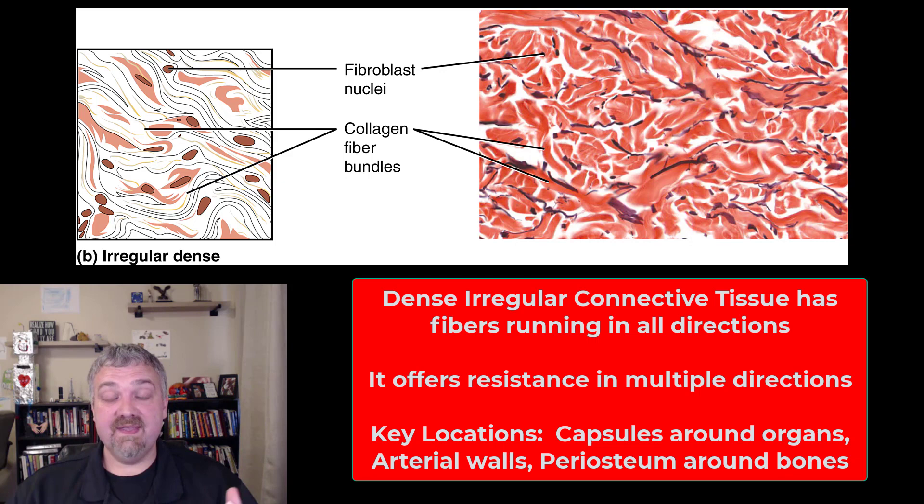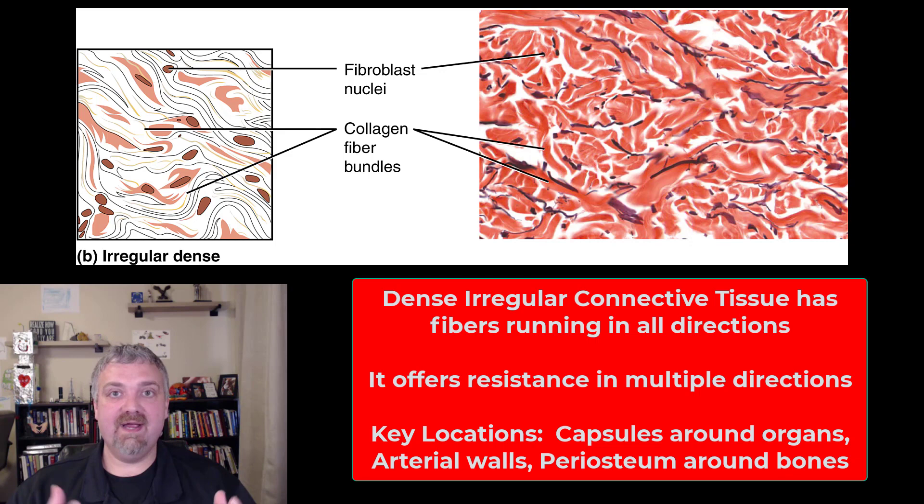Speaking of skin, the skin around your bones — called the periosteum — would be dense irregular connective tissue. The skin around cartilage, called the perichondrium, would also be dense irregular. But the capsules around your organs and arterial walls are the two key examples. Just remember it's not as strong in any one direction as dense regular connective tissue, but it offers strength and resistance in all directions.